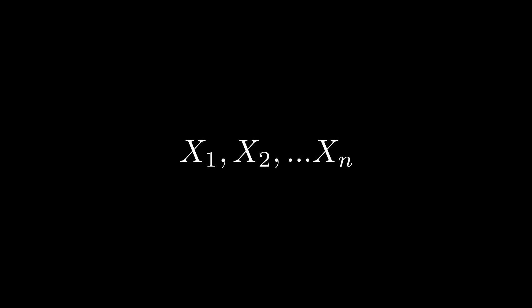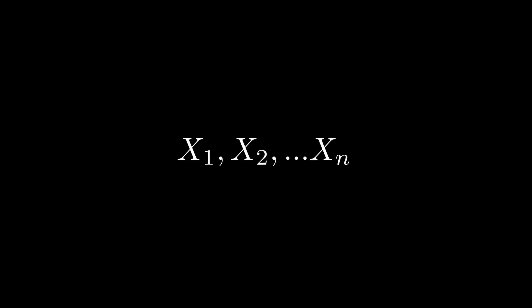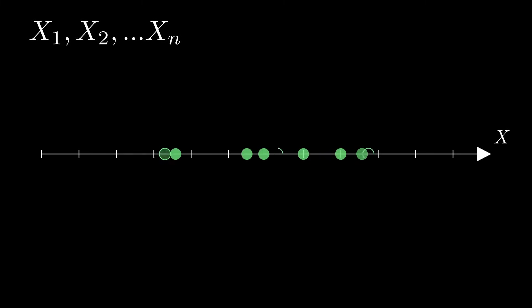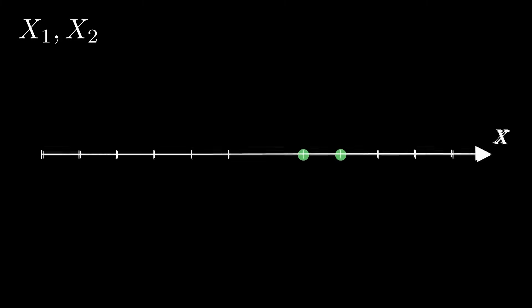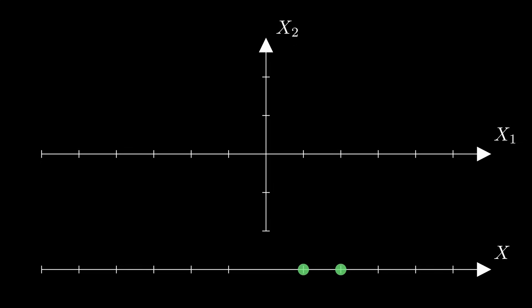Suppose we have a random variable x, and we measure some observations — x1, x2, and so on, to xn. It would be pretty standard to represent this data as dots on a number line. To start, let's narrow this down so that we have just two data points. With only two observations, we have another option to visualize this, which is as some point in 2D space. We do that by putting the different possible values for x1 on the horizontal axis, and the different possible values for x2 on the vertical axis. As an example, maybe when we draw our random numbers, we end up with 2 for x1 and 1 for x2, putting us at this point here.